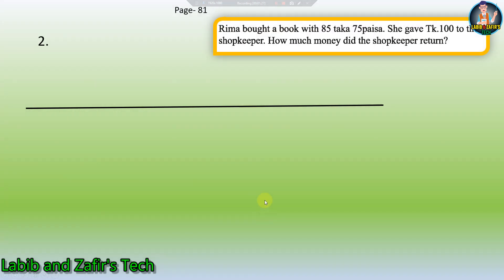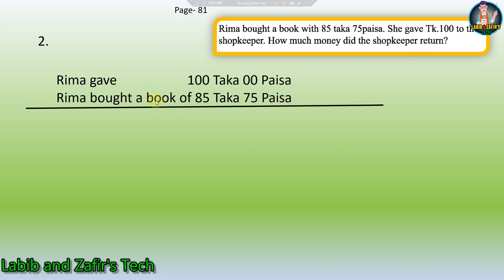Now let's go to our second word problem. Rima bought a book with 85 Taka 75 Persha. She gave 100 Taka to the shopkeeper. How much money did the shopkeeper return? Let us see the answer.